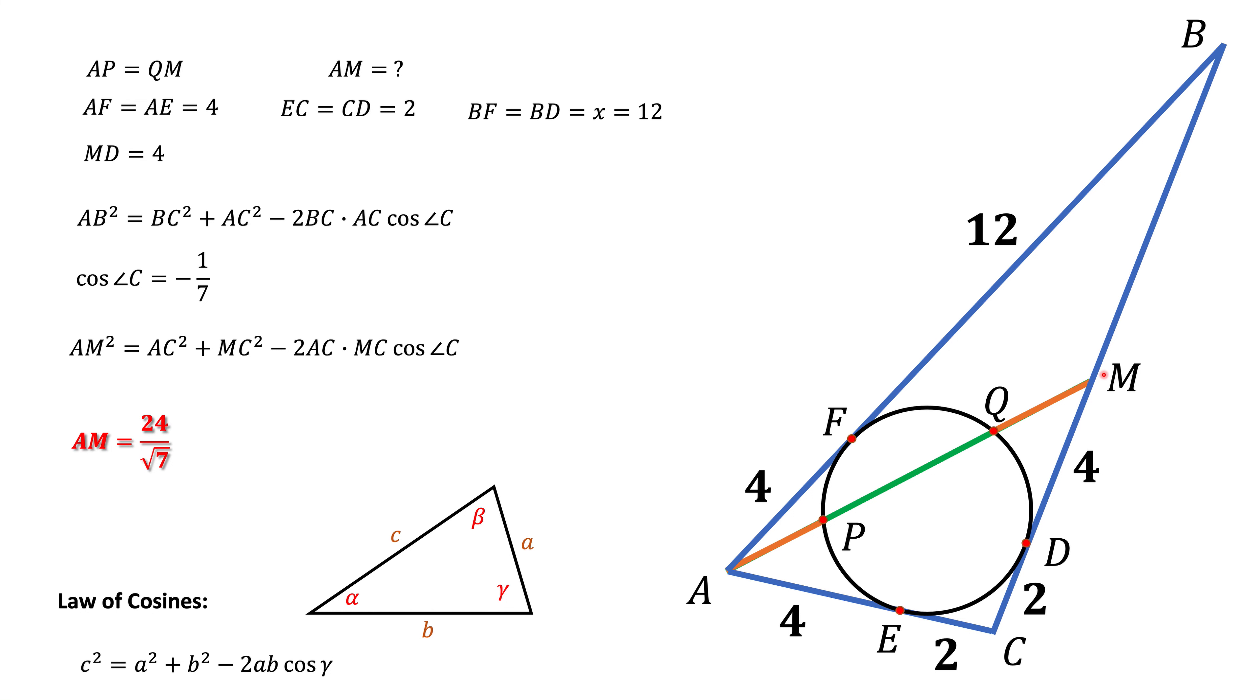Now the question is, what about this point M? We got this answer assuming that point M is between B and D. What if this point M is between C and D? Well, if you remember, we used the power of a point theorem. But for the power of a point theorem, it doesn't really matter where M is. So if M is here or here, MD should be 4. And we notice that since CD is only 2, there is no way for us to put M between C and D. M has to be between B and D.